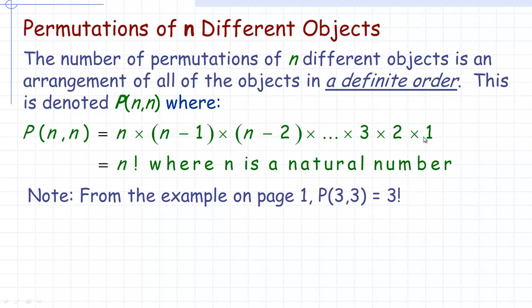If you take the product of all the numbers from 1 up to n, that's called n factorial. Some people say 'n prime' — it means the same thing, where n is a natural number. You can't take the factorial of a decimal, like there's no 5.6 factorial — it's not defined. From the example on the first page, we took the permutation of three letters taken three at a time, which equals 3 factorial — 3 times 2 times 1 — which gives us that 6.